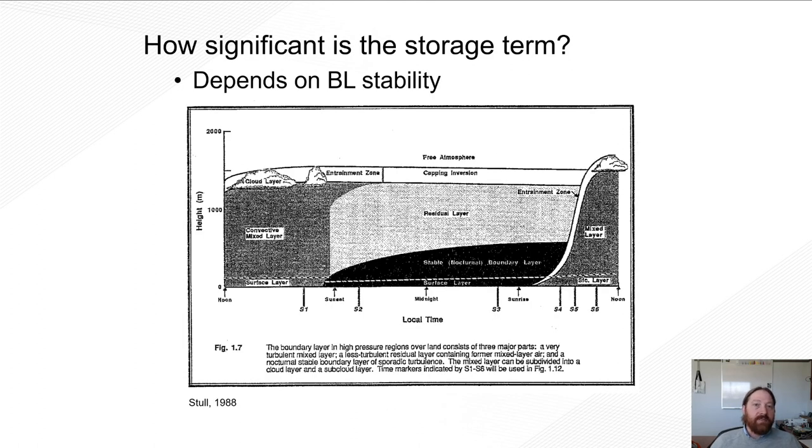So how significant is the storage term? Well, that really depends on our boundary layer stability. So if we look at this figure from Stull 1988, this black portion represents the nocturnal boundary layer and it's a stable boundary layer. So from sunset, you can see that this boundary layer begins to grow. And so as that boundary layer begins to grow, we get less and less mixing of the air and we can get an accumulation of something like CO2 building up below our sensor that our sensor doesn't see.